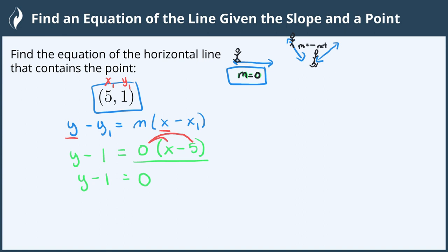Then we need to solve for the variable y by adding 1 to both sides, and we get negative 1 plus 1 cancels. So we're left with y on the left, and zero plus 1 is 1, so we have our equation of y equals 1.